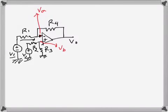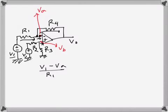The current that comes here goes this way, and we can apply KCL. No current goes into the input terminals — the input pins — so this current is zero, meaning the current through one branch equals the other. Applying KCL at this node, we get: (v1 - va) / r1 = (va - v0) / r4.